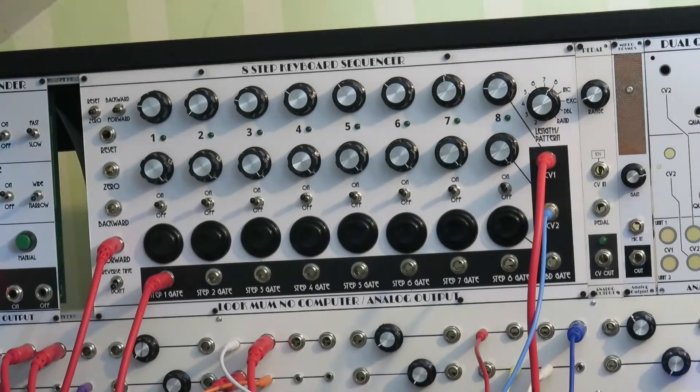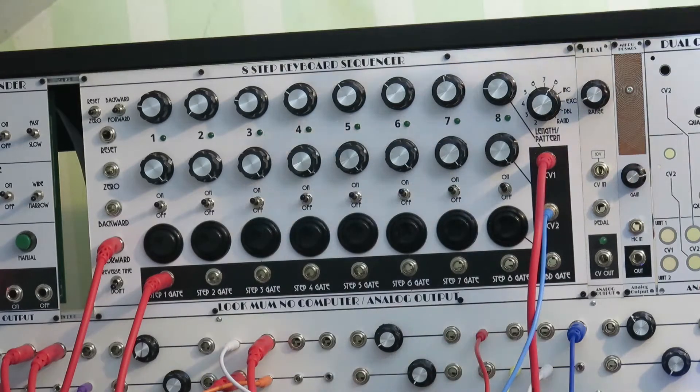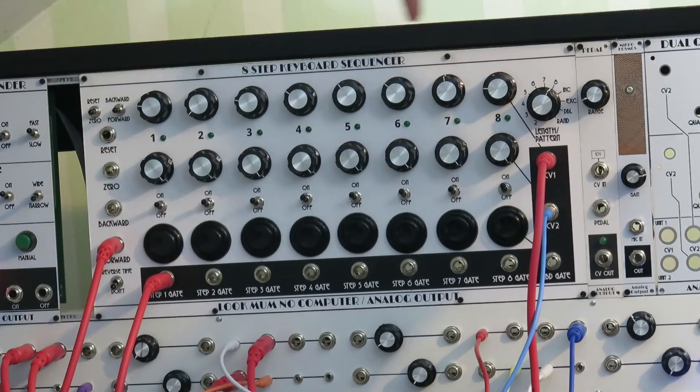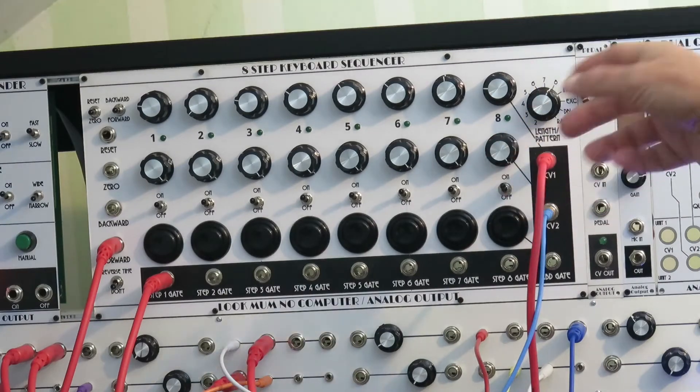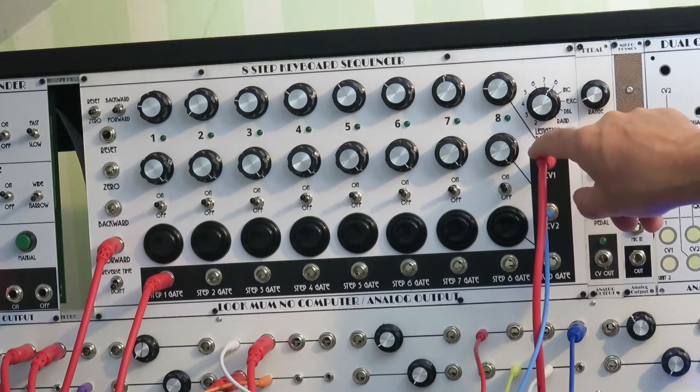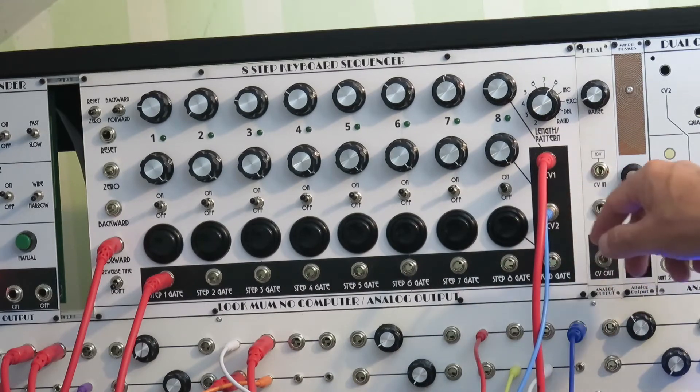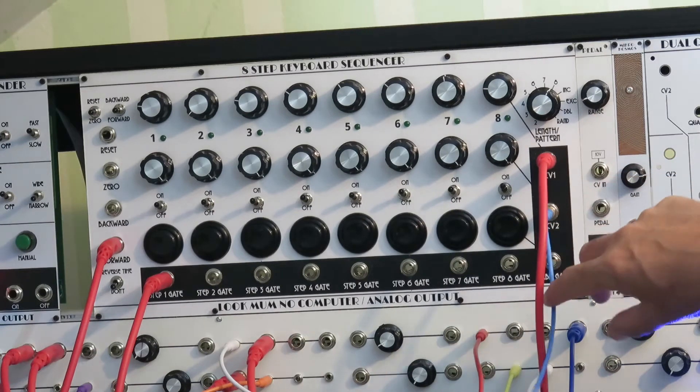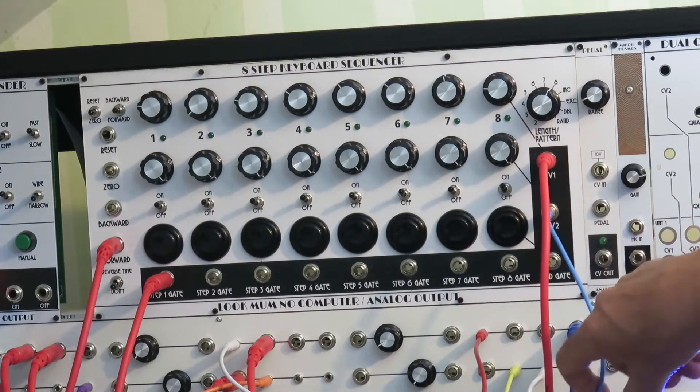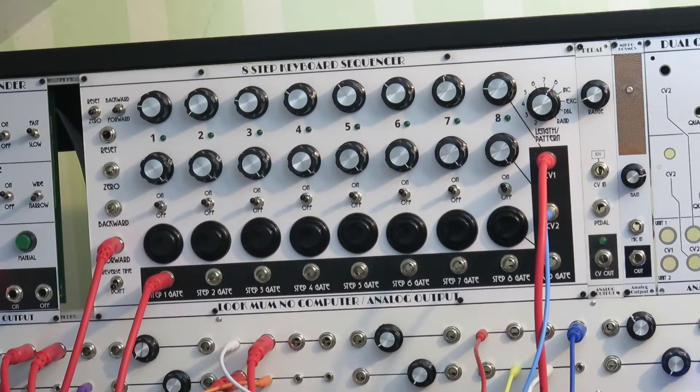Okay, let's walk through some of the features of this sequencer, focusing mostly on the stuff that's different from the original LMNC version. You've got two control voltage outputs. Top row of knobs controls the first one. Second row knobs controls the second one. I'm using the first to control the pitch of an oscillator. Second one, I actually have all the knobs turned all the way up. And this output is being used as if it were a gate to trigger an envelope generator, which then controls the ADSR.